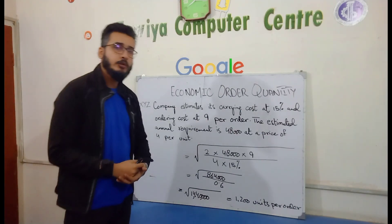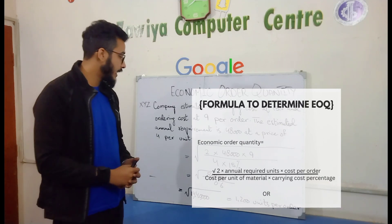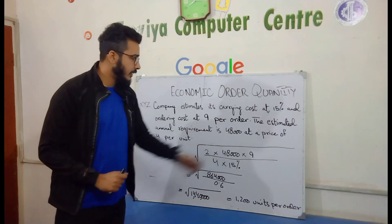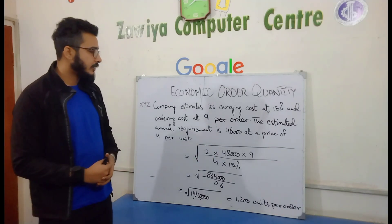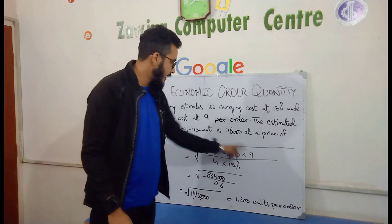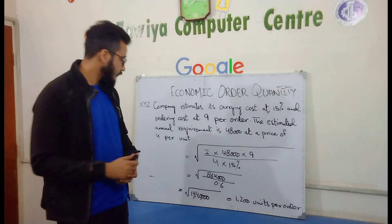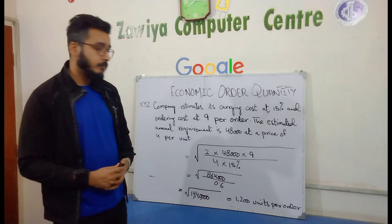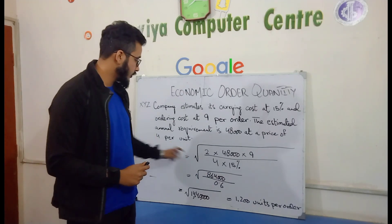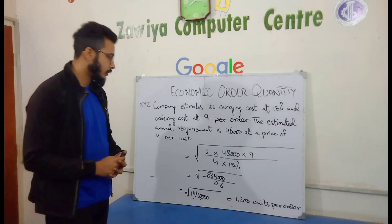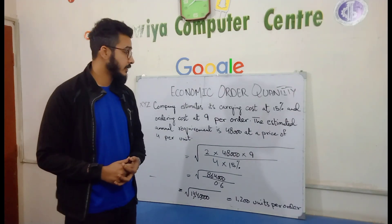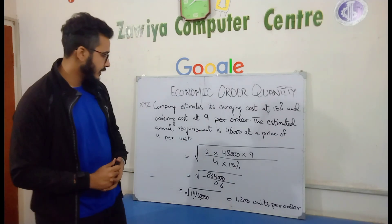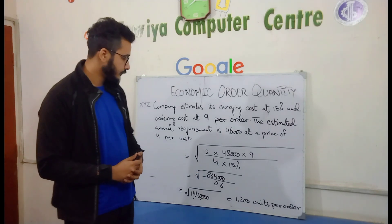To solve it, we apply the formula: multiply 2 by annual requirement of 48,000, then multiply by cost per order which is 9, divided by price per unit of material which is 4, multiplied by carrying cost of 15%.